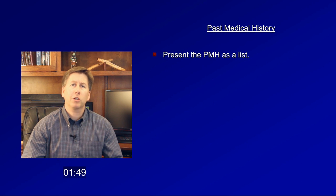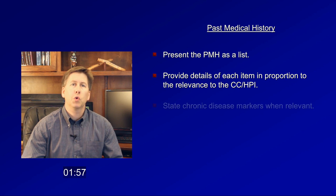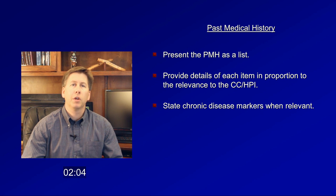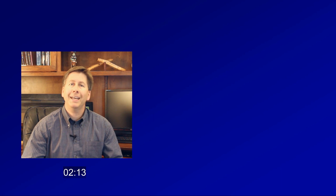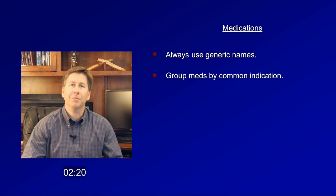For her past medical history, Mrs. Jones had an MI in 2010 but has no history of heart failure. She also has had diabetes for 20 years, with a recent hemoglobin A1c of 8.5%, diabetic peripheral neuropathy, and osteoarthritis. Her surgical history includes only an appendectomy 40 years ago. She has no significant gynecologic or psychiatric history. Medications include aspirin, metoprolol, lisinopril, simvastatin, metformin, and amitriptyline, the last of which she was recently started on for her neuropathy.